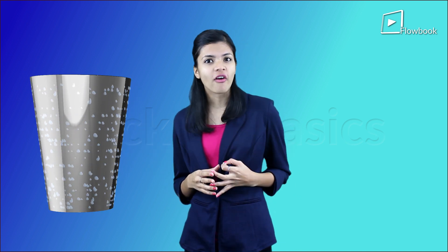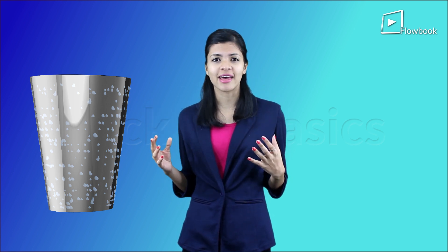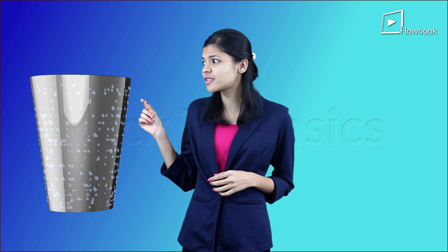After some time, what do you observe? You will see that there are small water droplets on the surface of the glass. Why is it so? It is because the cold ice has condensed the water vapor present in the air, which has now formed water droplets on the surface of the glass.